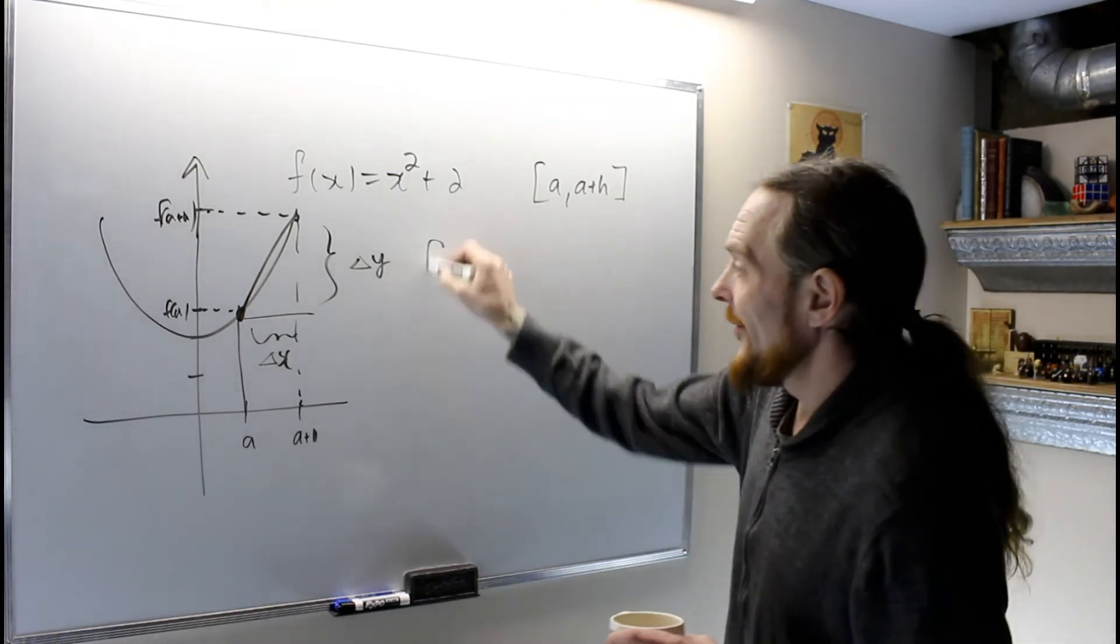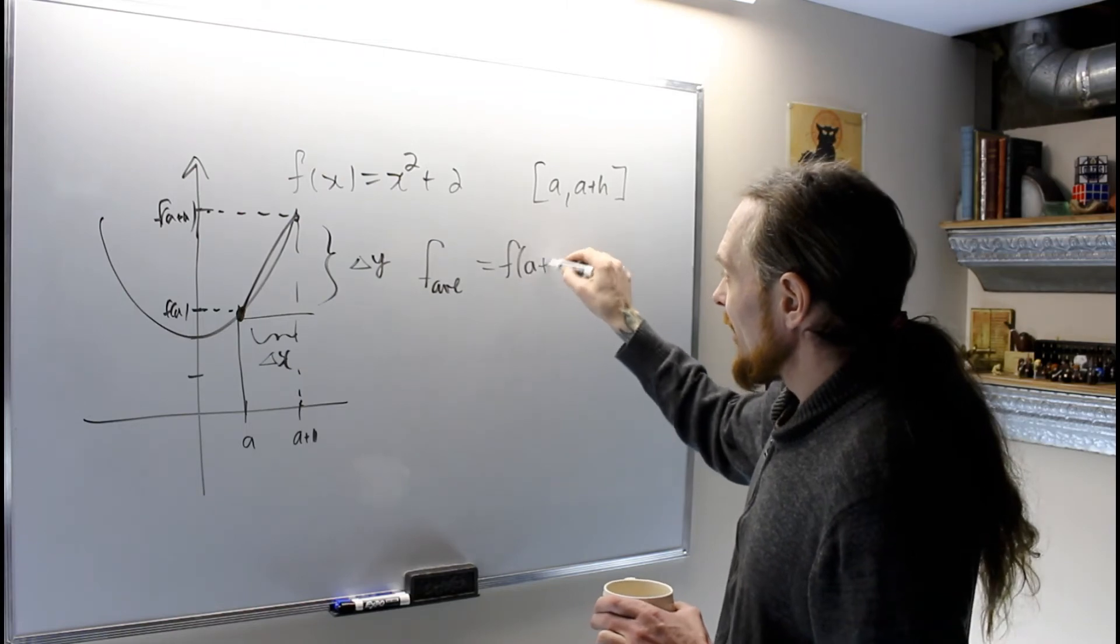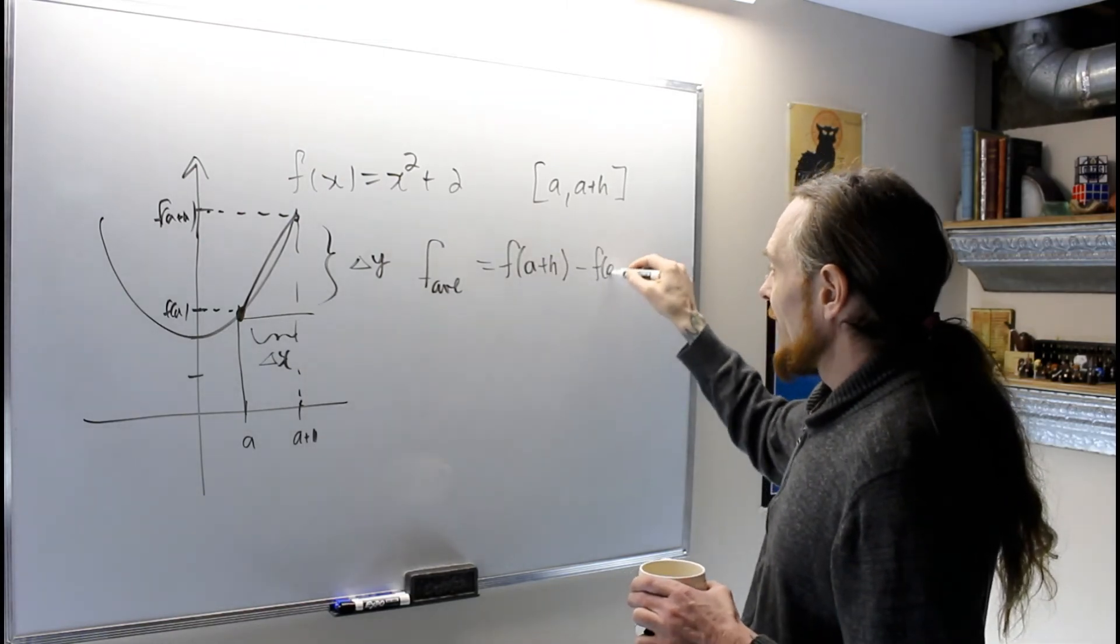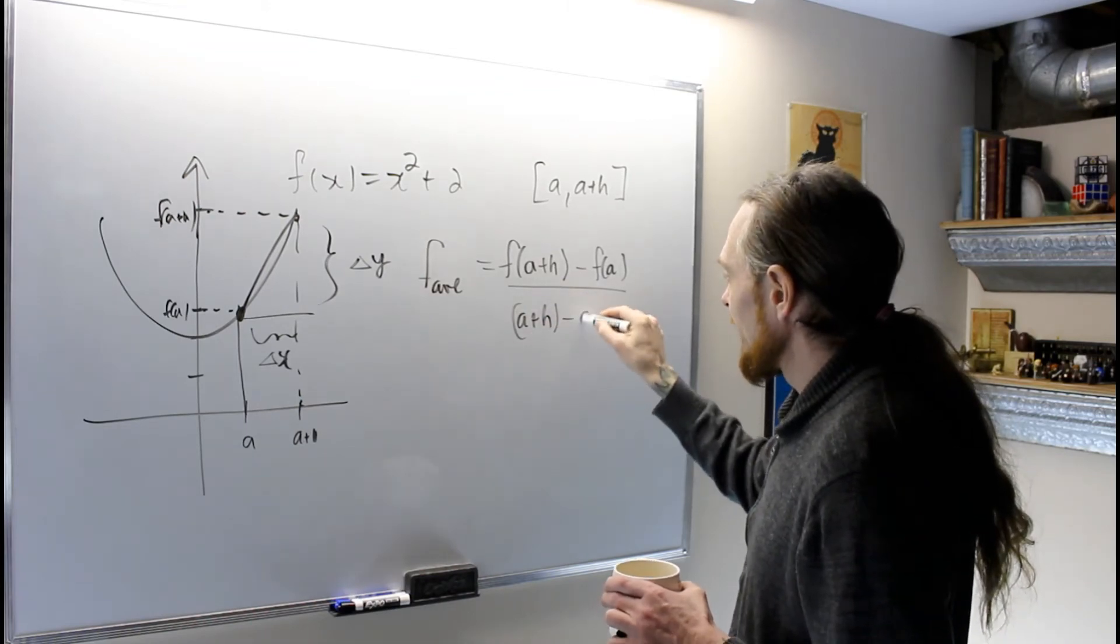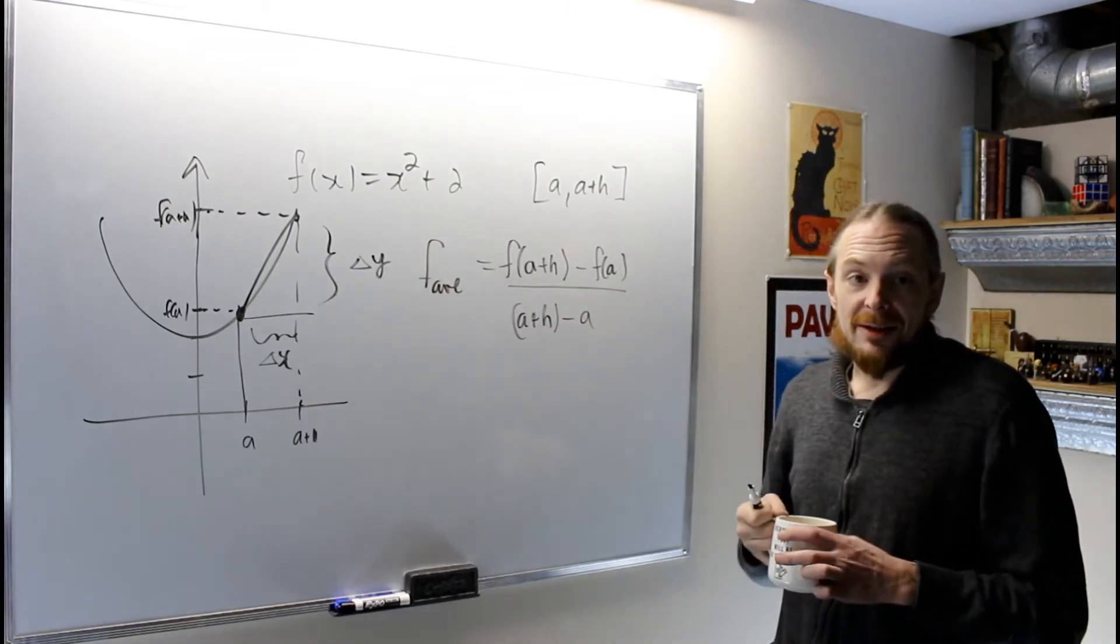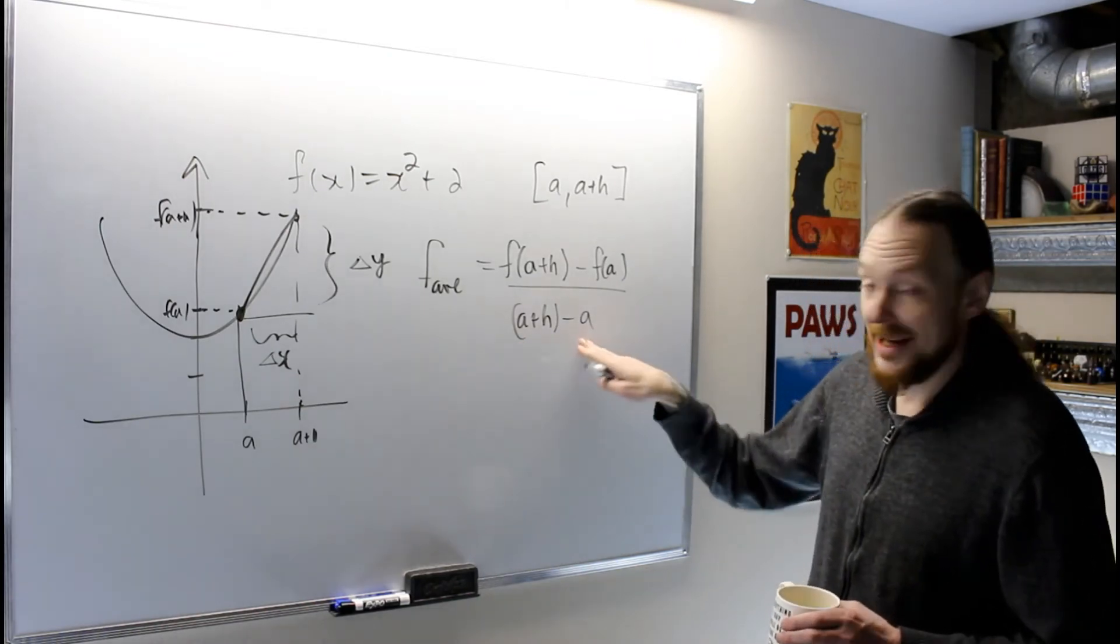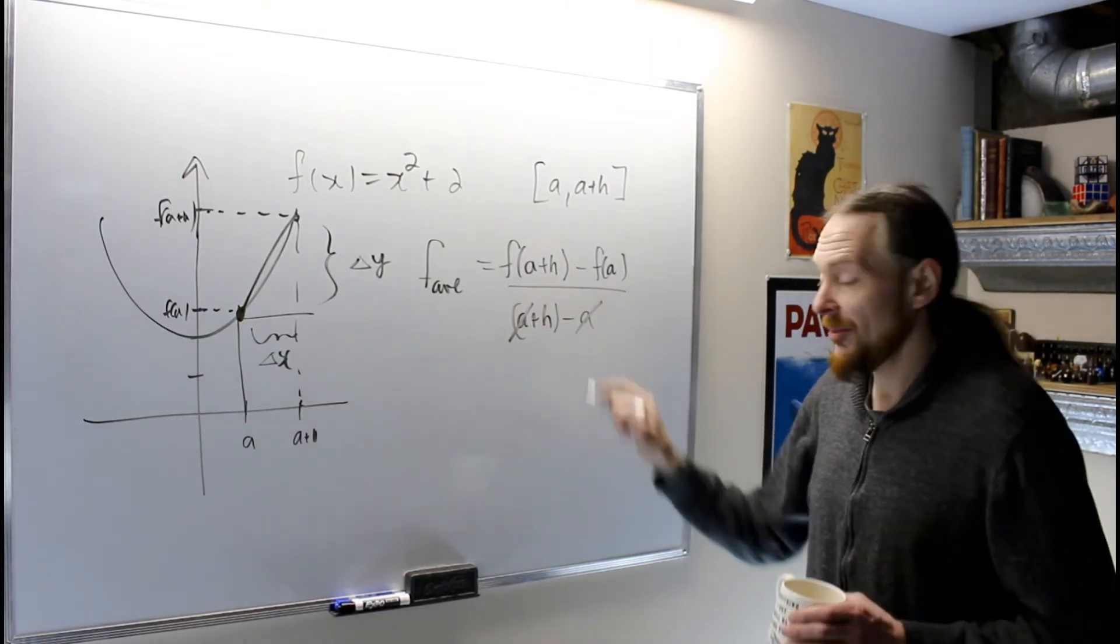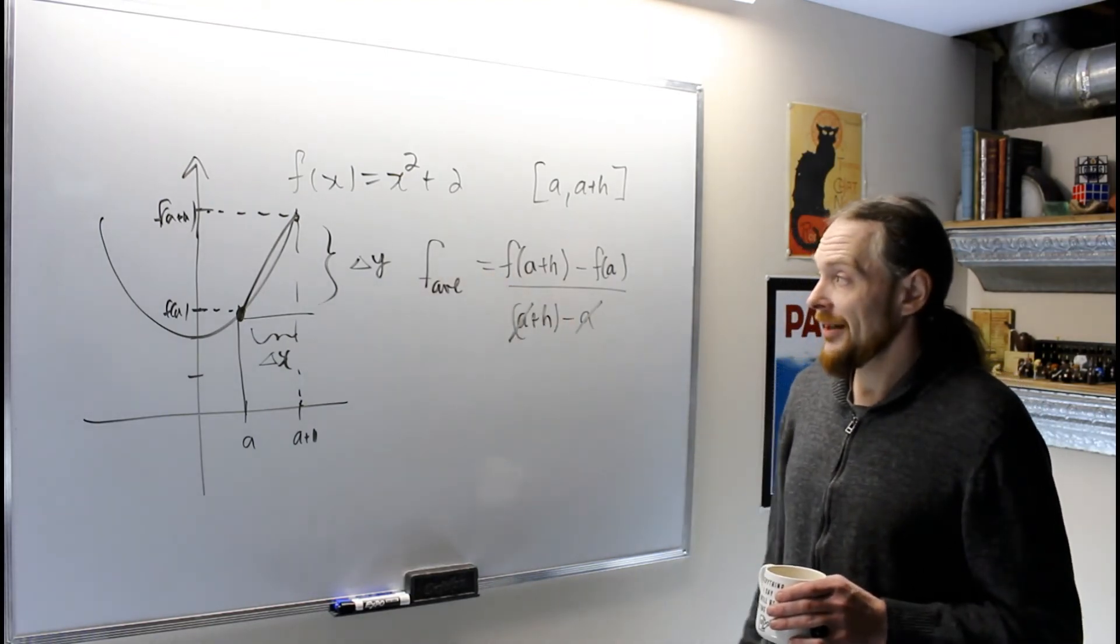Every time we do that, f average equals f(b), which is a+h, minus f(a), over a+h minus a. This is where you start forgetting that this is the slope of a secant line, because the a's always cancel and you get just h on the bottom, and then you can't see that it's change in y over change in x.